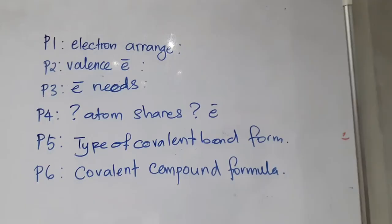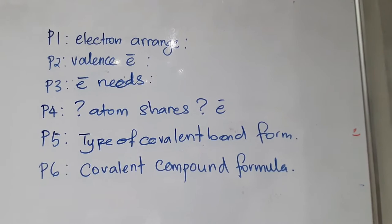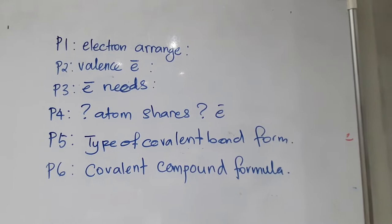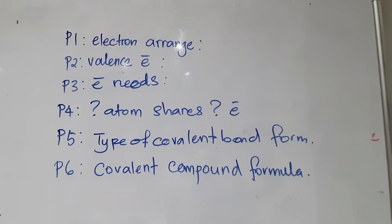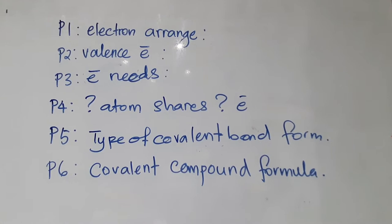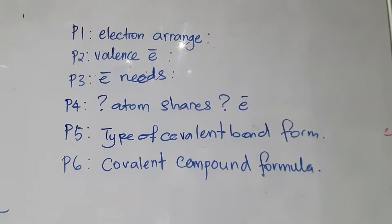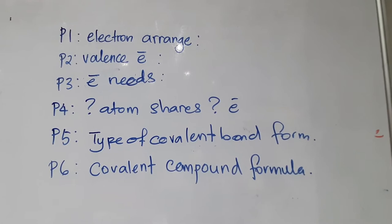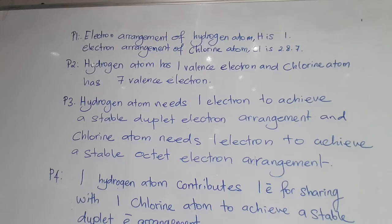For point four, you have to talk about how many atoms of each kind and how many electrons they are contributing for sharing so that they achieve a stable duplet or octet electron arrangement. Point five: you focus on the type of covalent bond — if they share a pair of electrons, it's a single covalent bond; if two pairs, a double covalent bond; if three pairs, a triple covalent bond. Then end your explanation by stating the chemical formula of the compound formed.